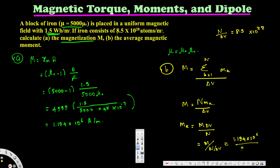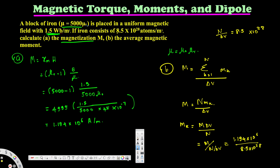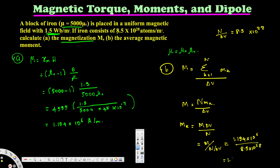Dividing 1.194 times 10 to the power of 6 by 8.5 times 10 to the power of 28 gives us the average magnetic moment: 1.4925 times 10 to the power of minus 23 amperes meters squared. That's the final answer. I hope this helps, thanks for watching.